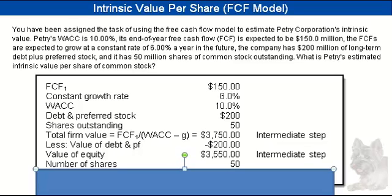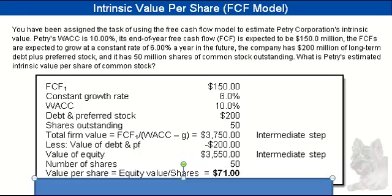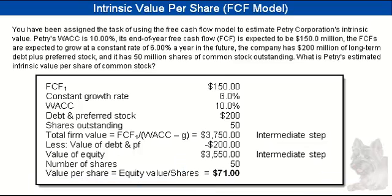We have number of shares outstanding of 50 million. So if we take the equity, which is $3,550 million, divided by 50 million shares, we're able to calculate the value per share. That's the intrinsic value per share and it comes out to be $71.